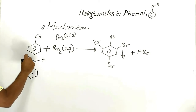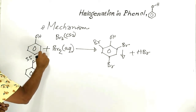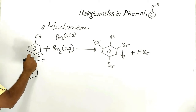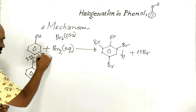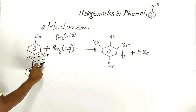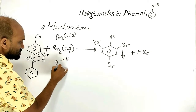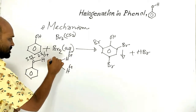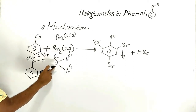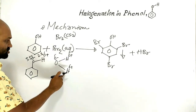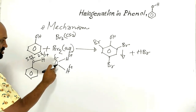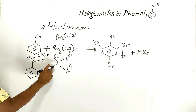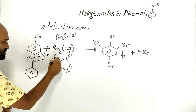In phenol, the electronegativity of oxygen is 3.5 and hydrogen is 2.1. Because of the higher electronegativity of oxygen, oxygen gets partially negatively charged and hydrogen gets partially positively charged. Water is a polar molecule — hydrogen is partially positive and oxygen is partially negative — because the electronegativity of oxygen is higher. The electron cloud moves towards oxygen, and as a result, electron density increases around oxygen.